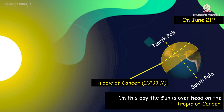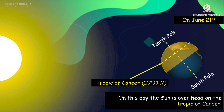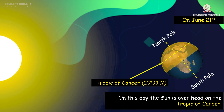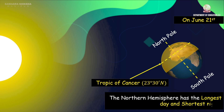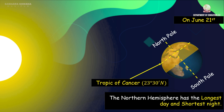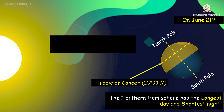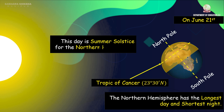The Tropic of Cancer is at 23 degrees 30 minutes north. The northern hemisphere has the longest day and the shortest night. This is the summer solstice for the northern hemisphere.